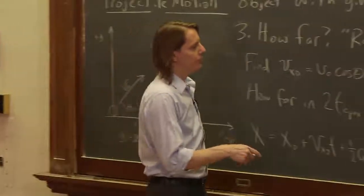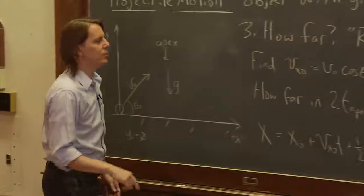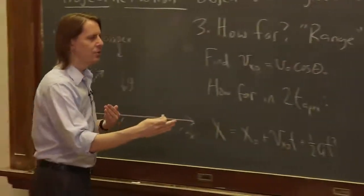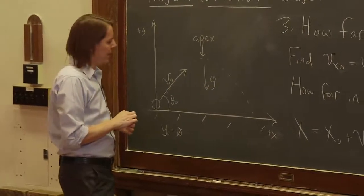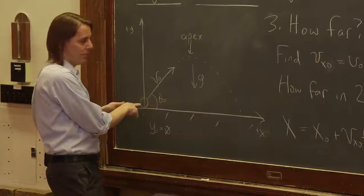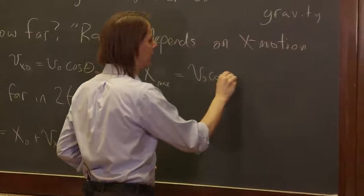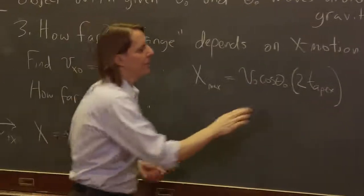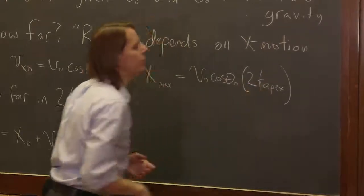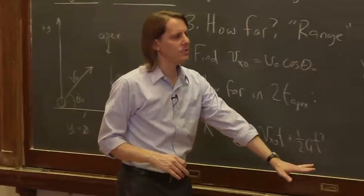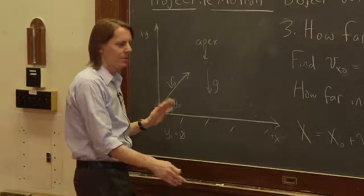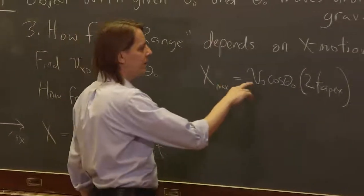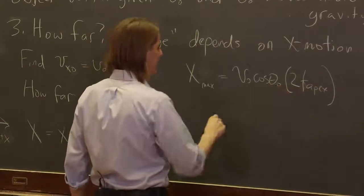You look at that equation and notice a lot of those terms are zero. We want x max — also called the range — which is the specific distance at a specific time: two times t apex. So x max: x naught is zero since we're starting at the origin. v_x naught is v naught cosine theta naught, multiplied by t, where t is two times t apex. The third term, one-half a t squared — the acceleration in x is zero. The only acceleration is gravity in y, so this simplifies greatly.